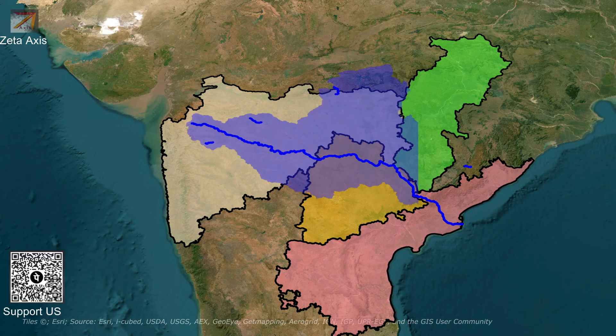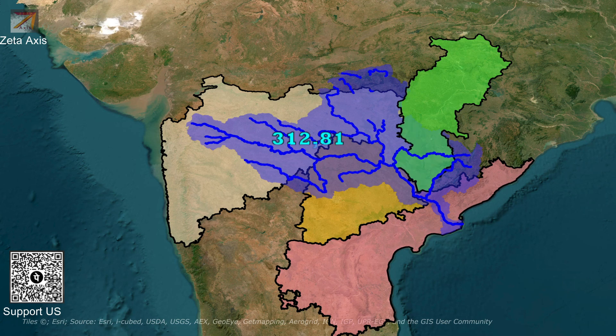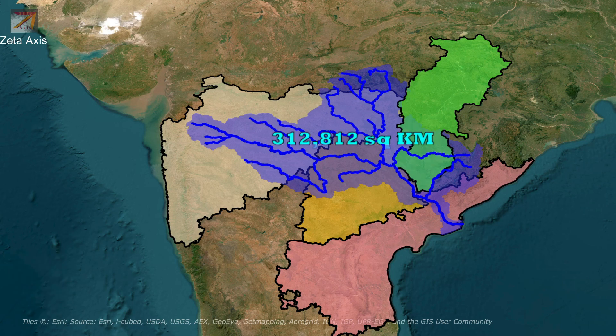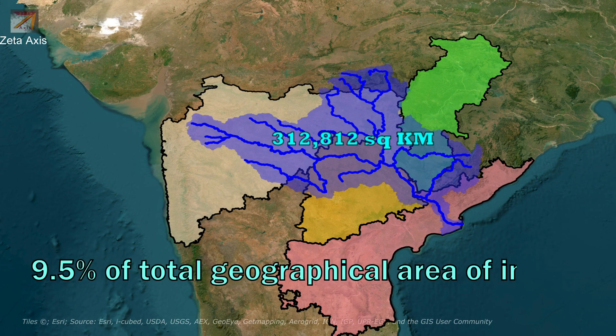The Godavari River Basin covers an area of 3,12,812 km², making it the 4th largest river basin for rivers flowing through India. However, it is the 3rd largest river basin within Indian territory after Ganga and Indus River. The Godavari River Basin covers approximately 9.5% of the total geographical area of India.